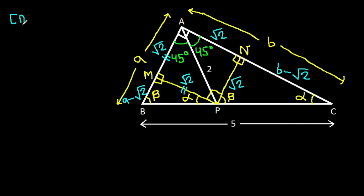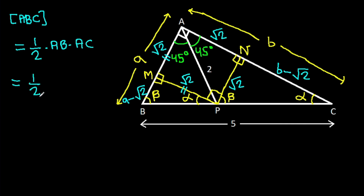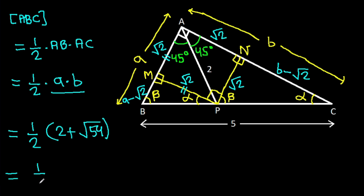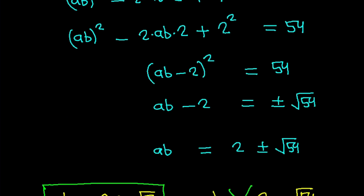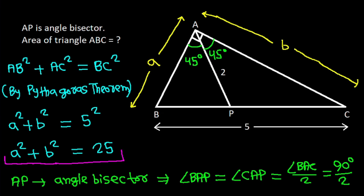Area of triangle ABC equals one half times base AB times height AC, which equals one half times A times B, equals one half times AB. With AB equal to 2 plus root 54 and AC equal to 3 root 6, the area equals one half times (2 plus root 54) times 3 root 6.